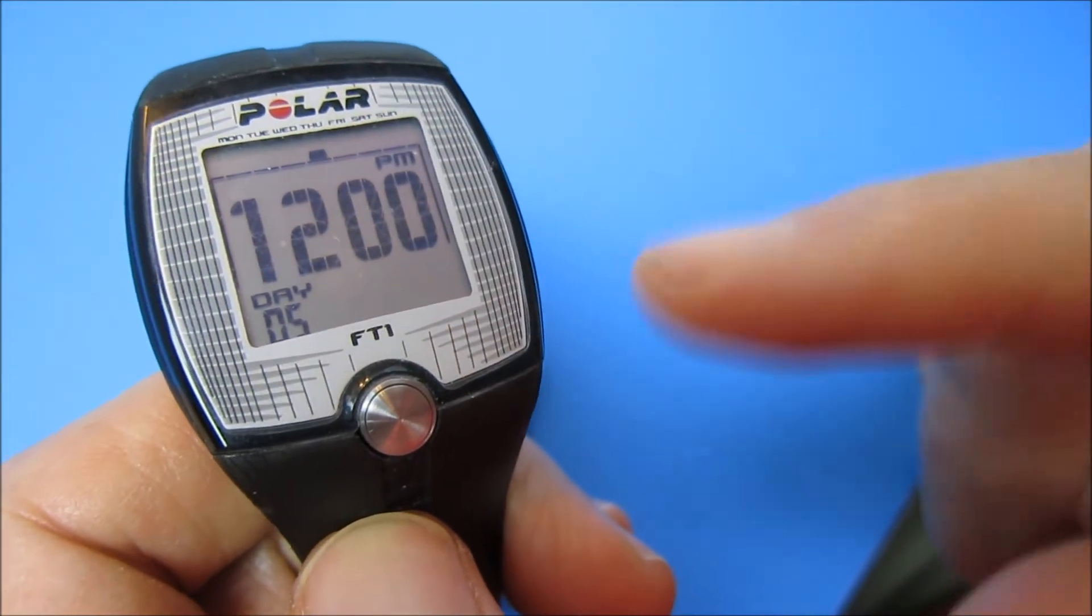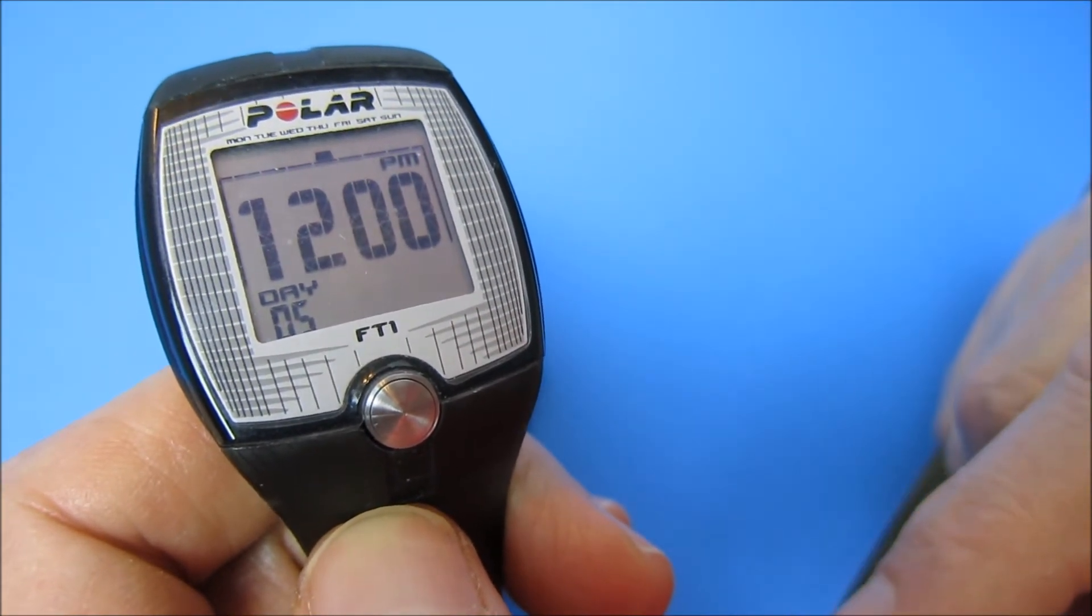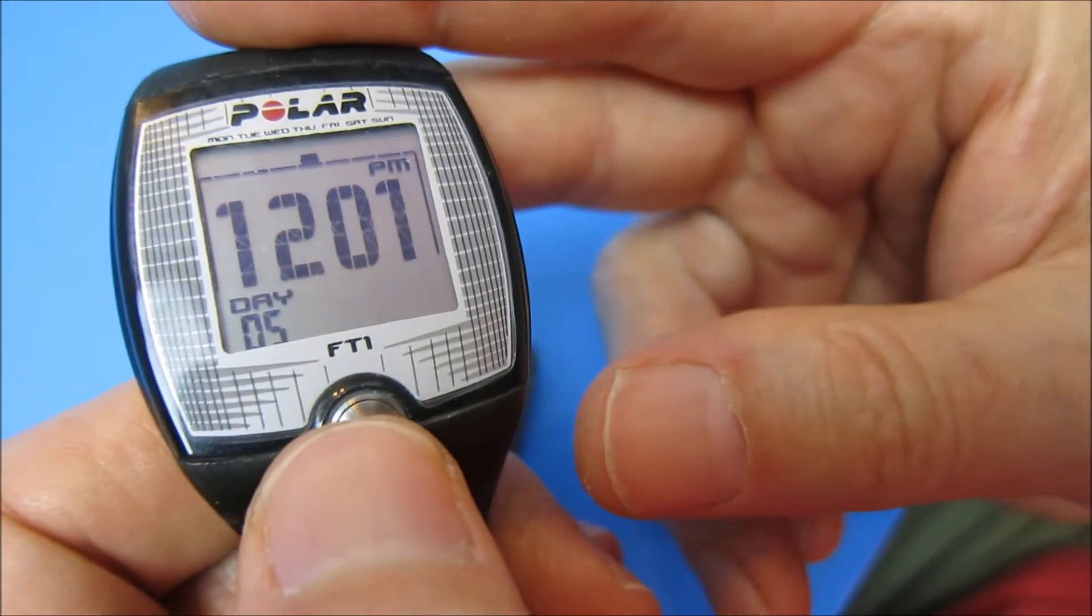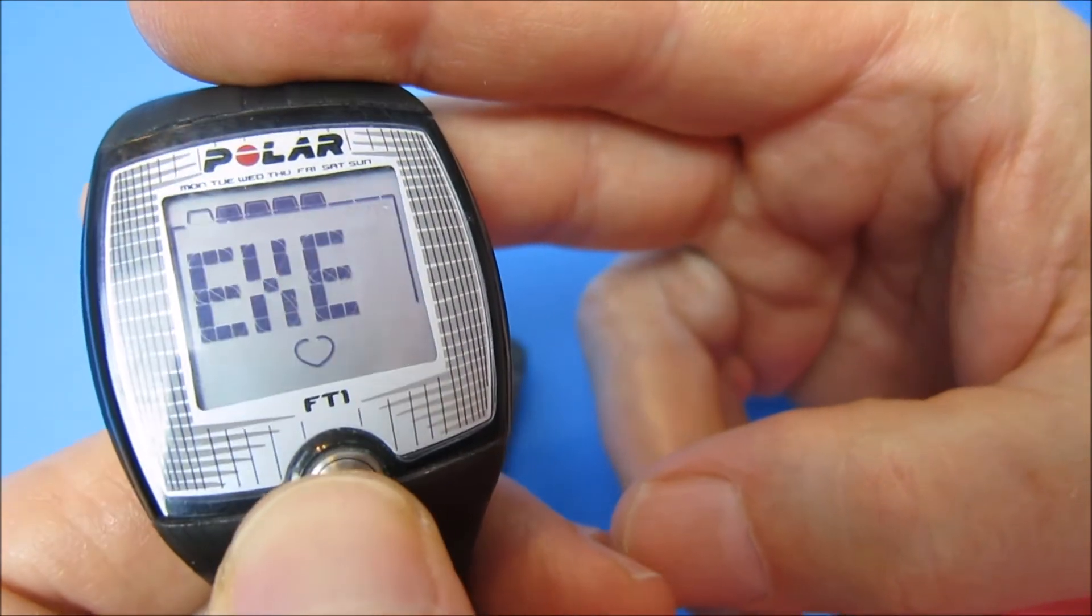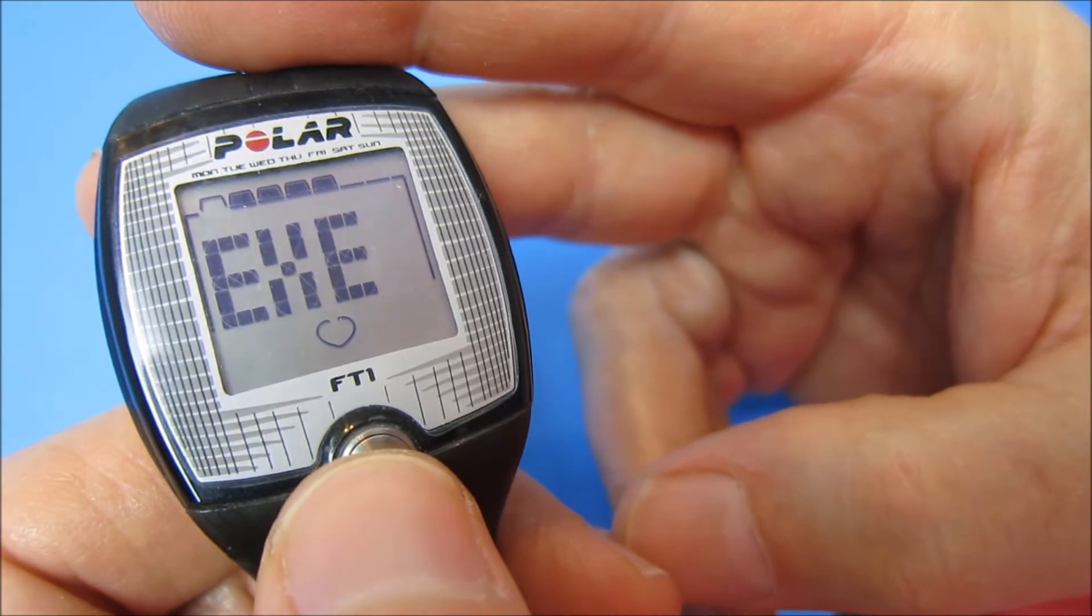Now we're back into the main menu where you just have your time and the calendar. If let's say we did a workout program, we probably have one stored here. Let's go to file.